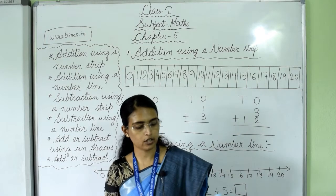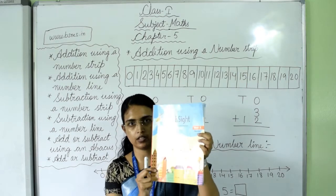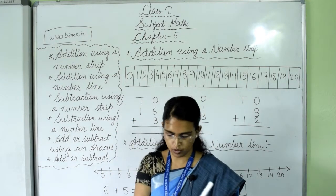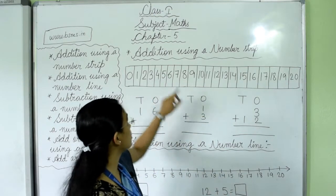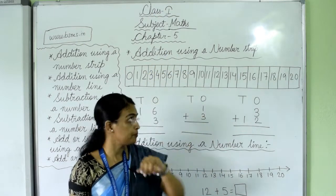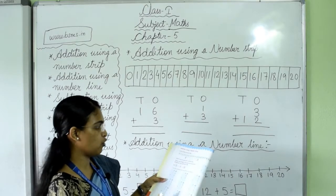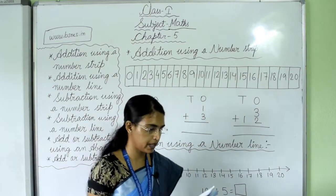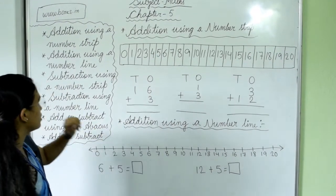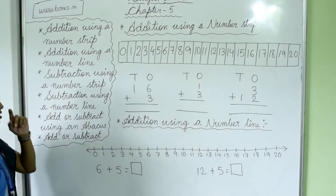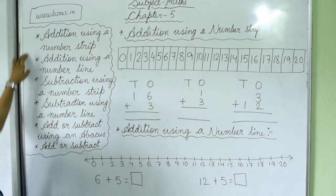Hello kids, take out your math book. Today we will continue with the same chapter, that is Chapter 5. Take out page number 54. The topic is addition using a number strip. Before starting, I want to say that today we will cover all the topics.